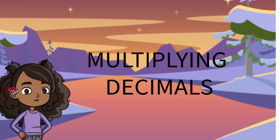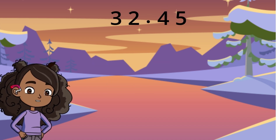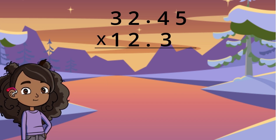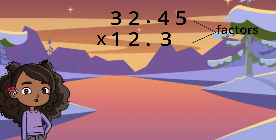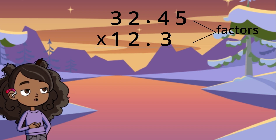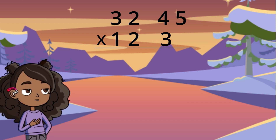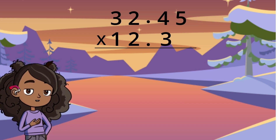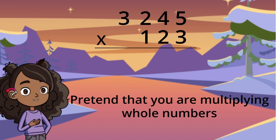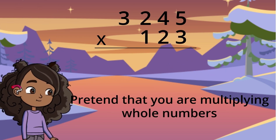Today we are multiplying 32 and 45 hundredths by 12 and 3 tenths. The numbers that are being multiplied are called factors. Let's forget that the decimal exists and we are multiplying full numbers. Now let's begin!